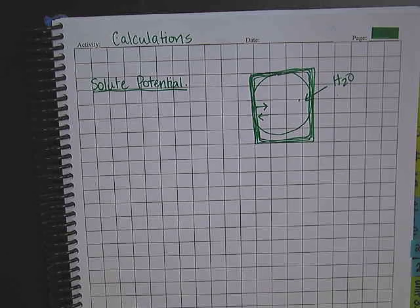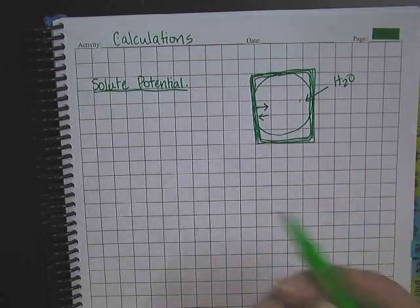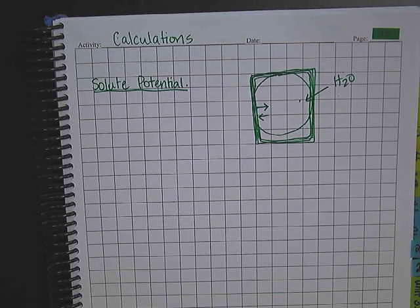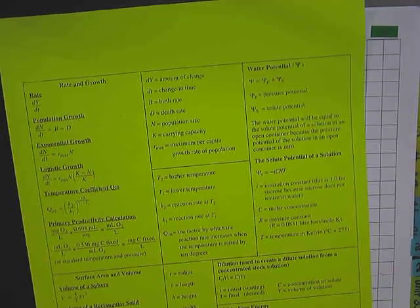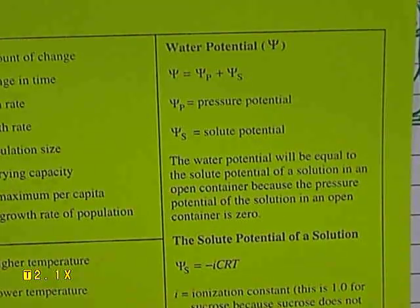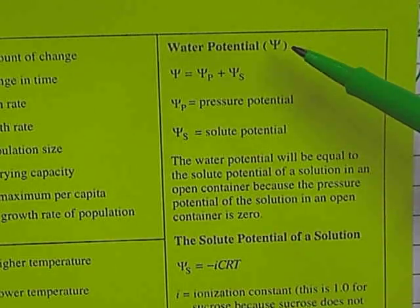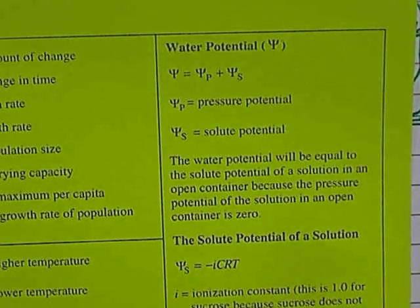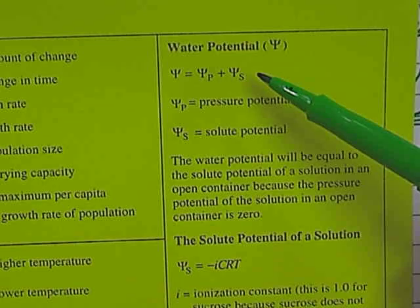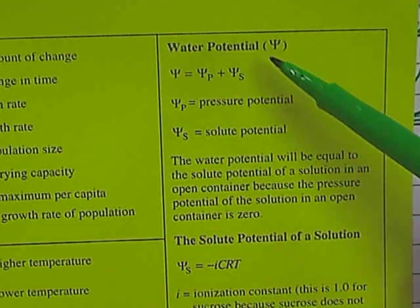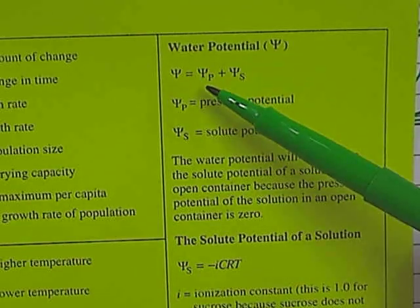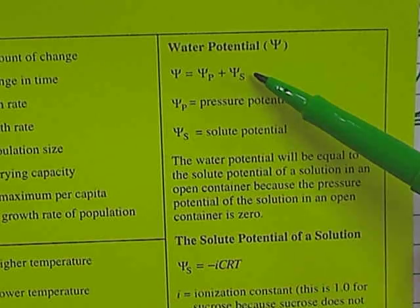In order to do these calculations, there is some information we're going to need — most of it is provided for you, with the exception of one variable. For solute potential, we need to know the formula, and the formulas can be found on your formula sheet. We're looking at water potential, which is just a pressure — the amount of pressure that the wall is pushing back on the water once the cell has filled up. Here is our formula for water potential, using the Greek letter psi (P-S-I).